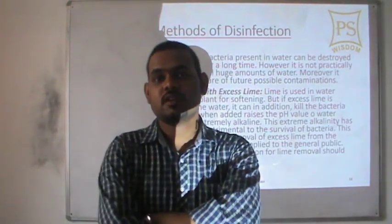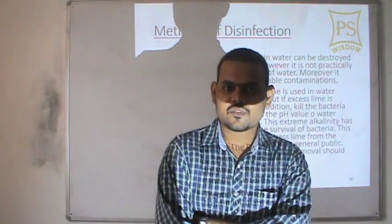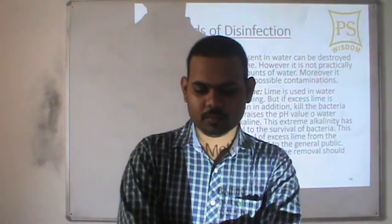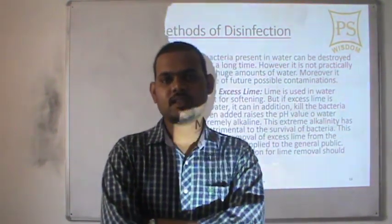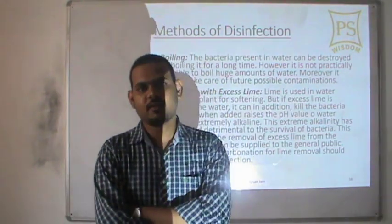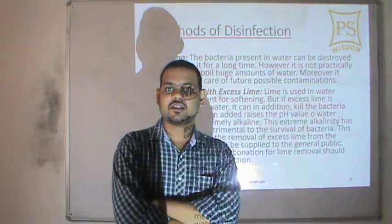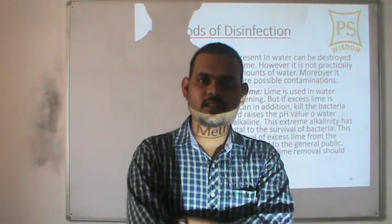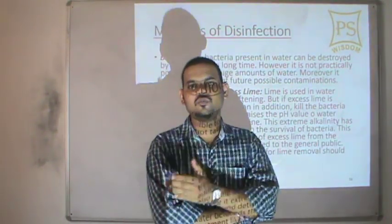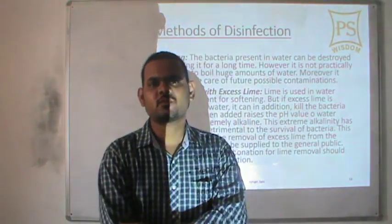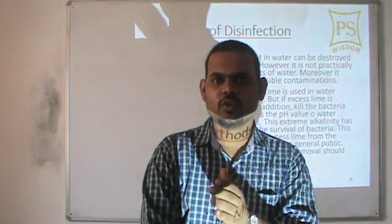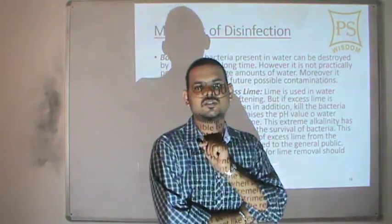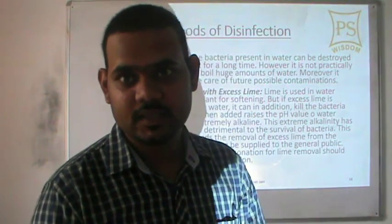Previously lime was added for softening the water; now we add some more lime to disinfect and kill the bacteria. Lime increases the pH of the water, making it extremely alkaline, and under extreme alkaline conditions the bacteria are killed. The important thing to remember is to remove the lime before distributing the water to the public. The process of recarbonation is used to remove this excess lime from the water after disinfection.